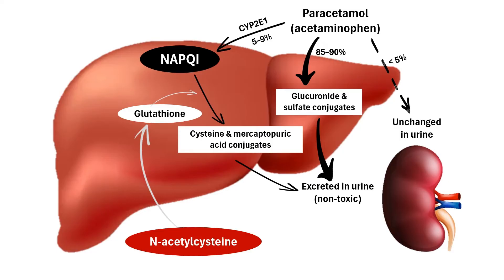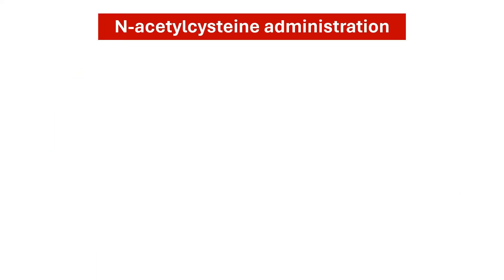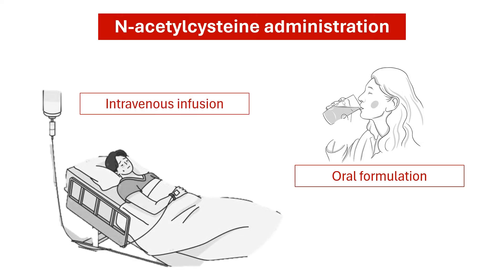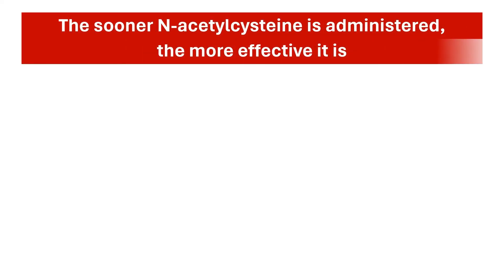Additionally, N-acetylcysteine directly binds to NAPQI and converts it into non-toxic substances. N-acetylcysteine can be administered through oral or intravenous routes. Intravenous administration is now more commonly used, being the preferred method in severe cases or when patients cannot tolerate the oral formulation. N-acetylcysteine is highly effective in preventing liver damage if administered promptly.